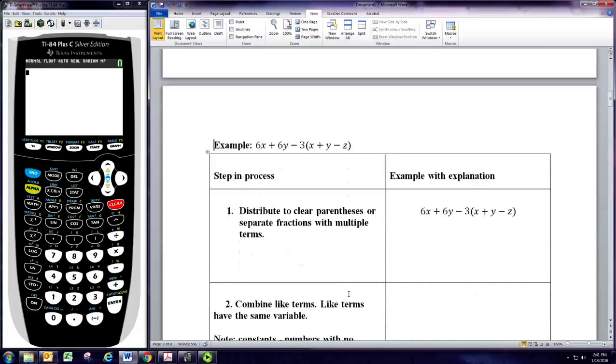Alright, let's look at this next example. We have 6x plus 6y minus the product of 3 and x plus y minus z.